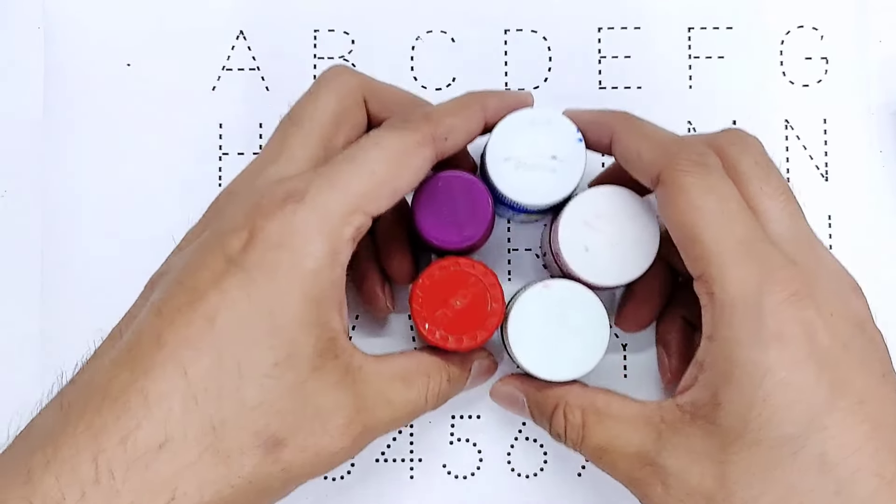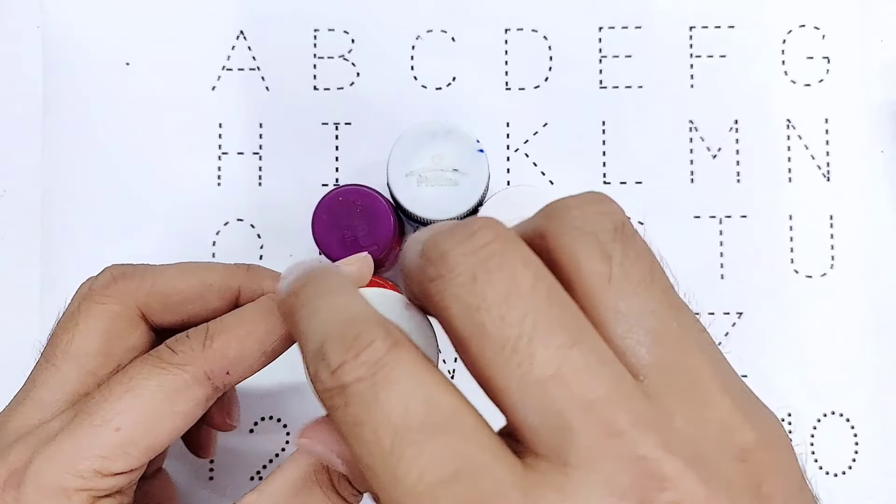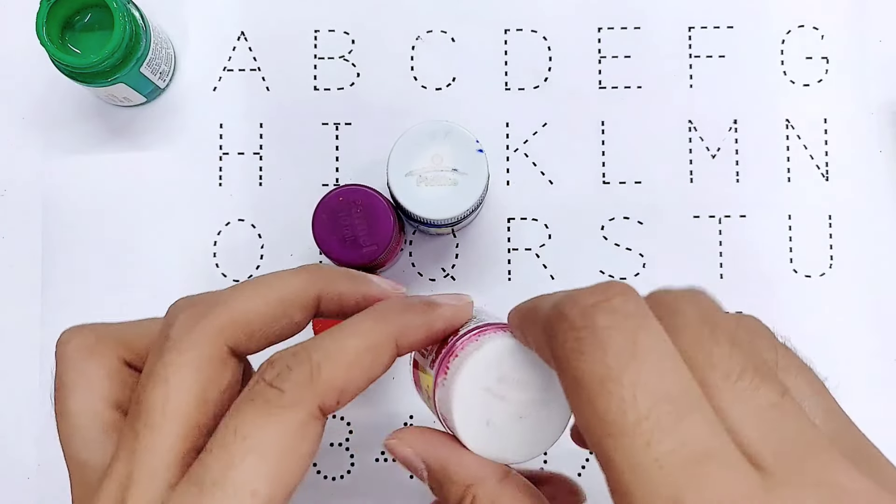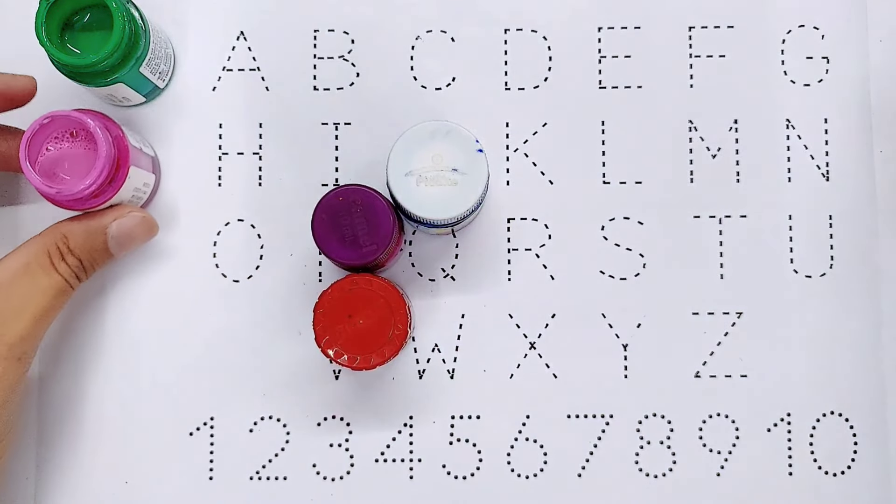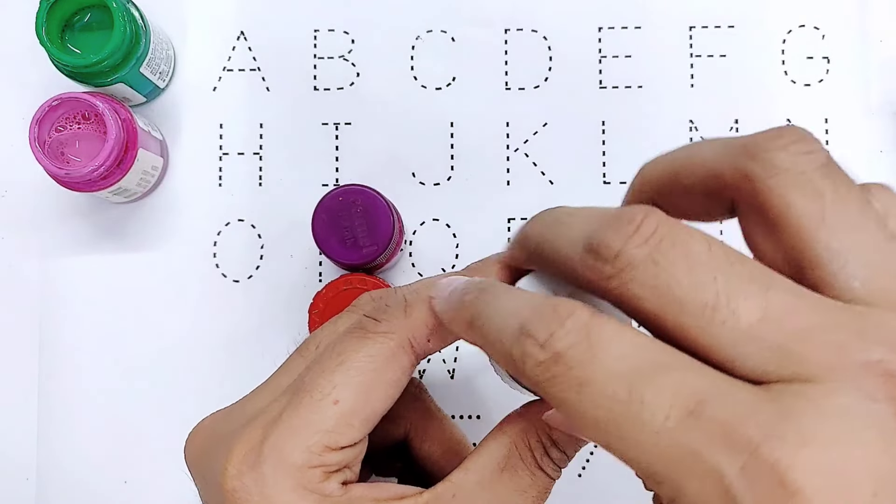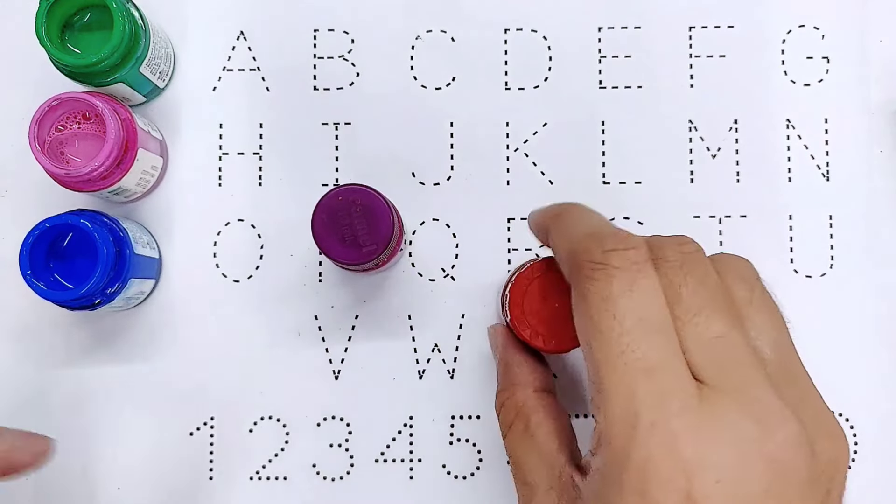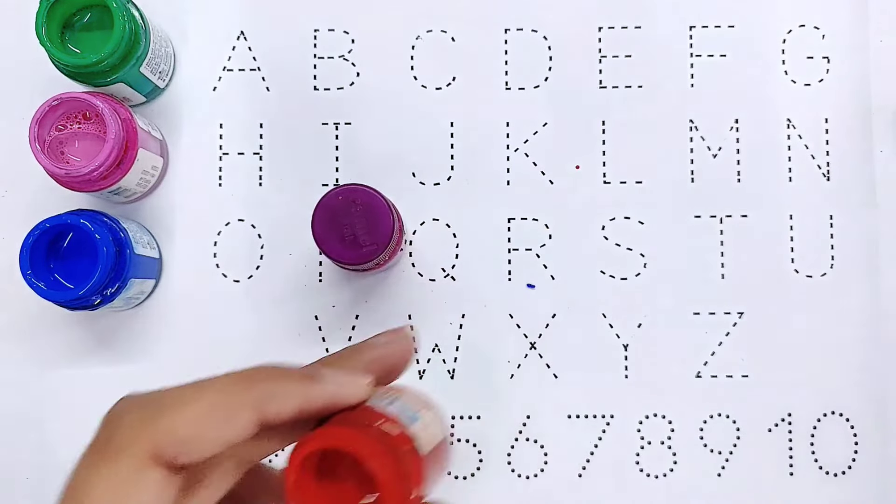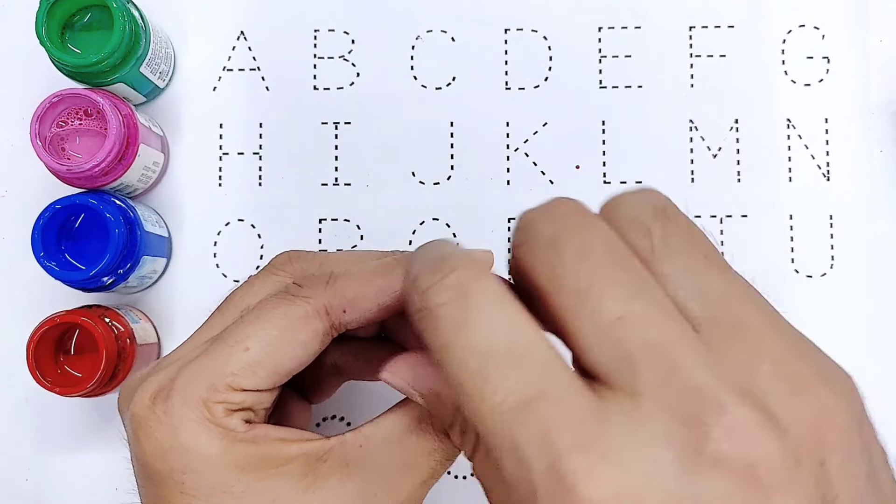Let's learn some colors name. It's green color. It's pink color. It's blue color. It's red color. It's purple color.